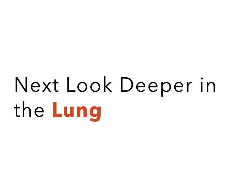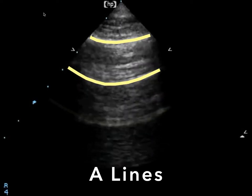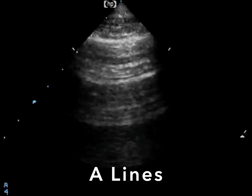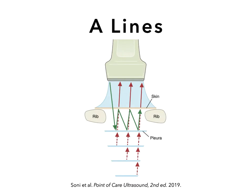Next, look deeper in the lung — adjust your depth to at least 14 to 16 centimeters. Normal lungs should appear to have multiple horizontal hyperechoic lines descending deeper into the screen. These are called A lines and indicate normally aerated lung provided there is normal pleural sliding. A lines are a reverberation artifact — they develop because the pleural line is a strong reflector of ultrasound waves. The wave is reflected to the skin, then back into the chest, then back off the pleural line repeatedly. The ultrasound machine interprets time as distance, so subsequent reflections appear as deeper and deeper horizontal lines on the screen.